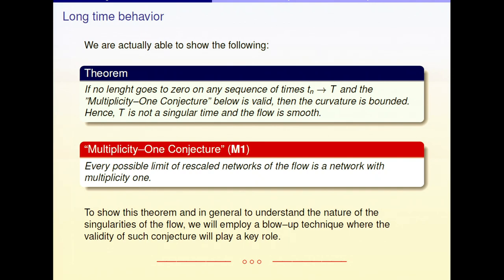For the motion of a single simple embedded curve, at the singularity you have the curvature unbounded. But by the Grayson theorem, if you take a simple curve in the plane, this curve becomes convex at some point, gets rounder and rounder, and it shrinks down to a point in finite time. So also there the length must go to zero.